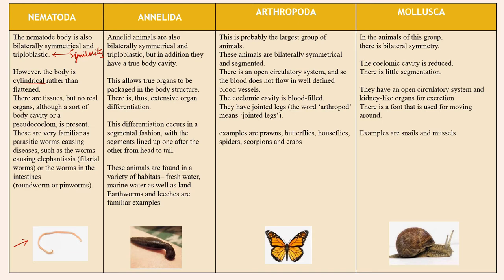The next family is Annelida. Annelid animals are also bilaterally symmetrical and triploblastic, but in addition they have a true body cavity. This allows true organs to be packed in body structure, resulting in extensive organ differentiation. This differentiation occurs in a segmental fashion, with segments lined up one after another from head to tail. These animals are found in fresh water, marine water, and on land; leeches are an example.